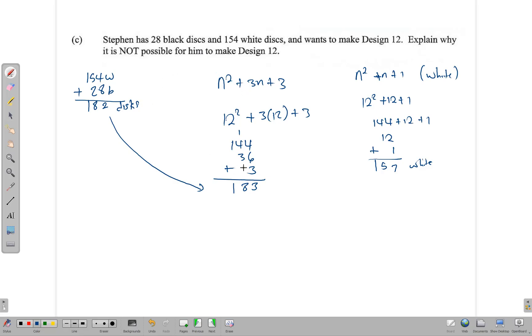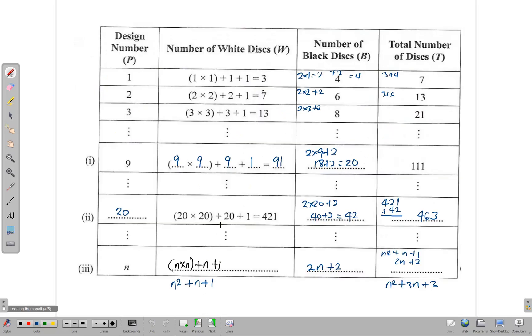So there is more than one approach to take when working this out to say whether or not he can make the design and why. In the first instance, he doesn't have enough discs. It's going to take 183. He has 182. But he doesn't have enough of the type of discs either.